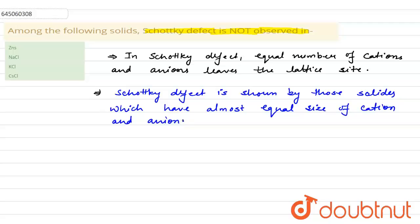Now if we will talk about the given compounds: zinc sulfide, NaCl, KCl, cesium chloride.